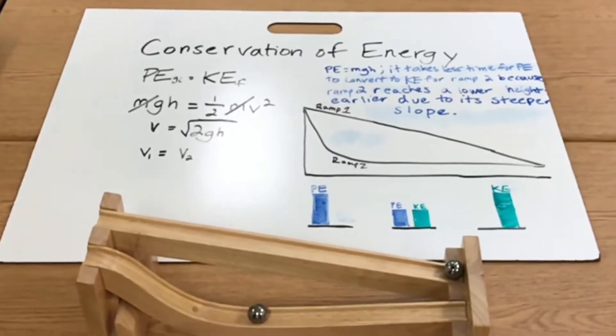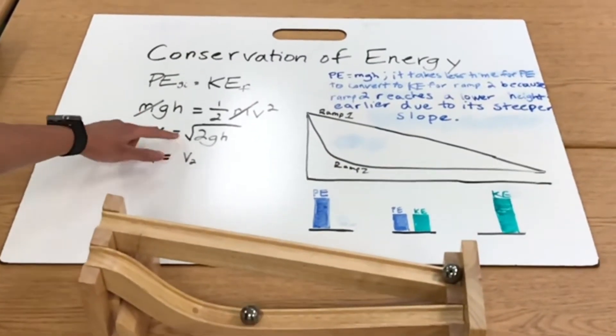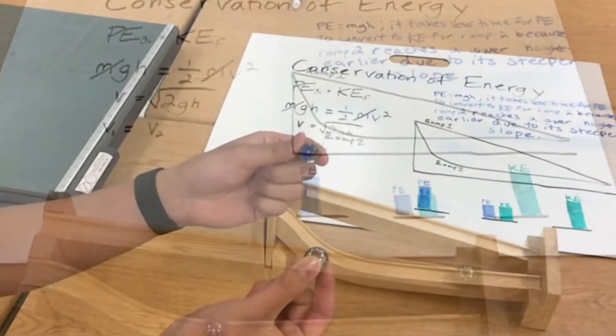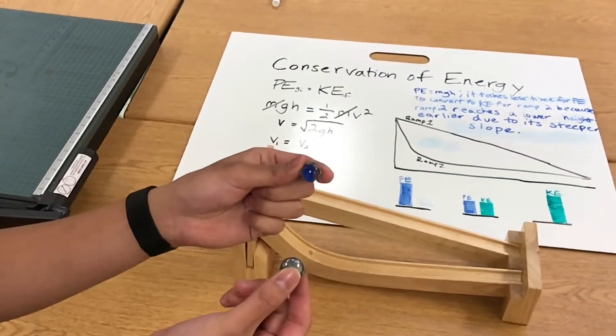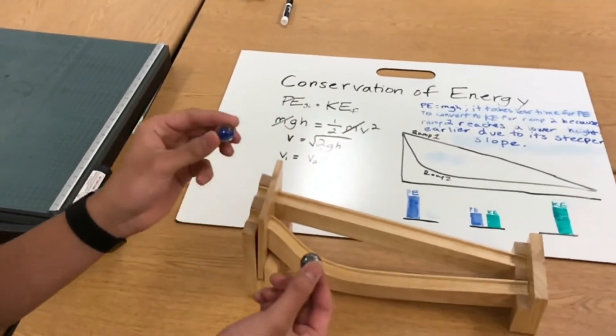Using two larger masses, we find that the result is still the same because the velocity is independent of the mass as it cancels on both sides. Even when using two balls of different masses, the marble having less mass, we find that the result is the same.